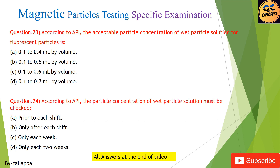Question 24: According to API, the particle concentration of wet particle solution must be checked: (A) prior to each shift; (B) only after each shift; (C) only each week; (D) only each two weeks.